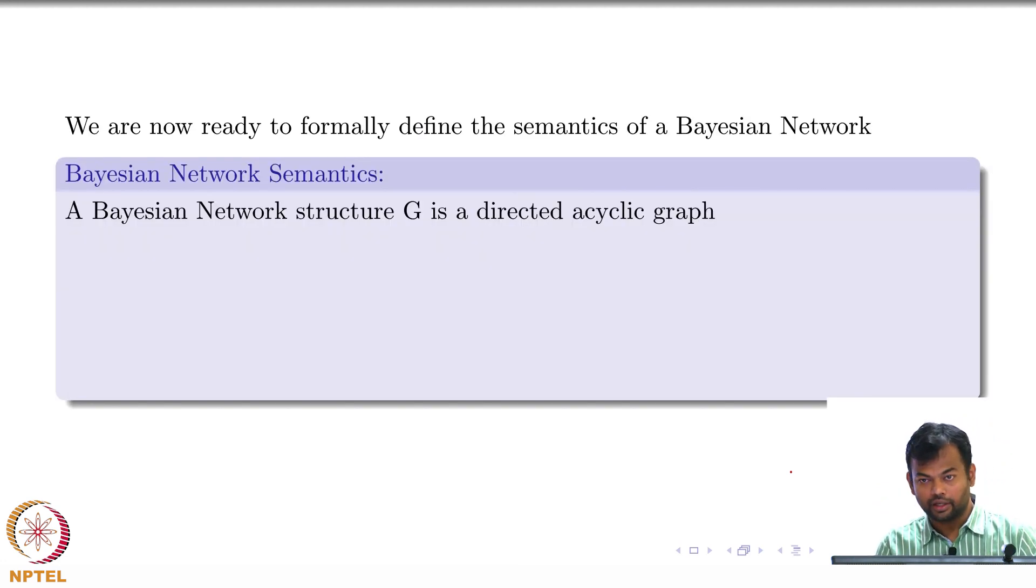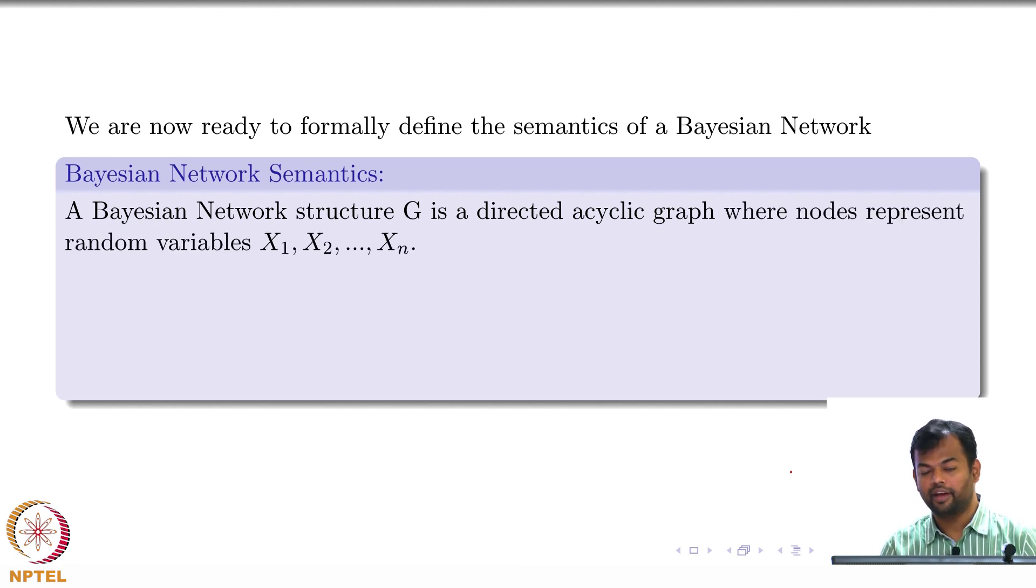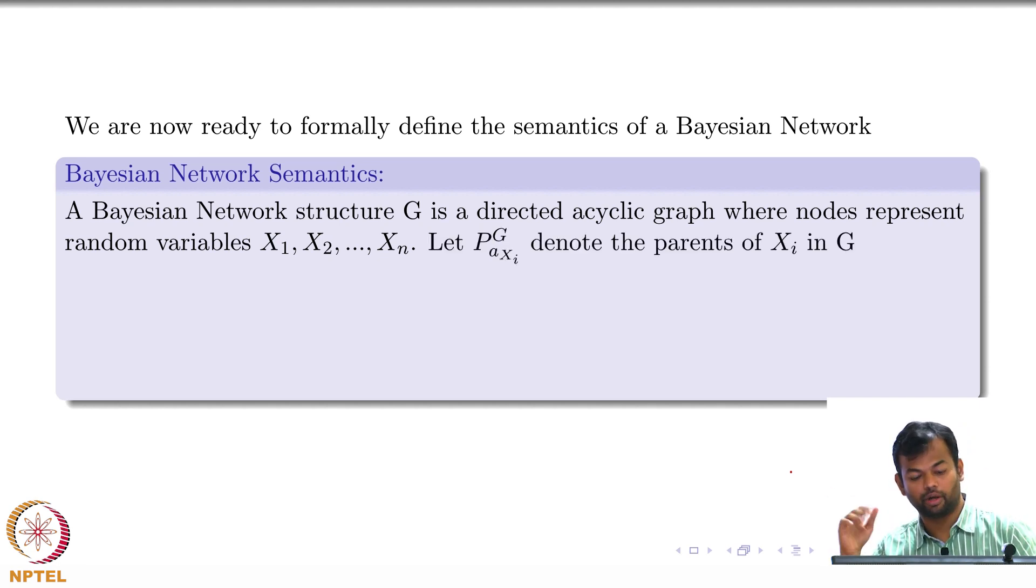So, a Bayesian network is a directed acyclic graph. There are no cycles in this graph, where nodes represent the random variables X1 to Xn. Let PA of Xi in this graph denote the parents of Xi in G.